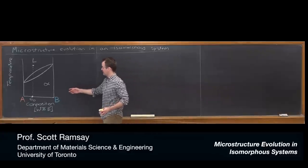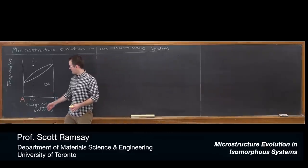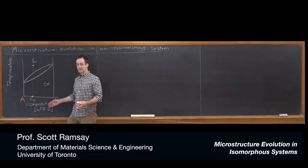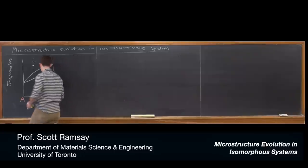So I've gone ahead and sketched a binary isomorphous phase diagram over here. Two components, A and B, so it's binary, two components A and B, by convention.